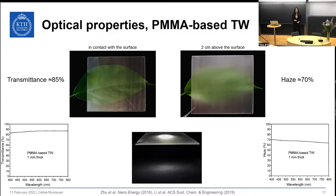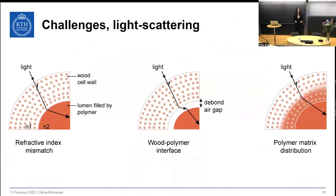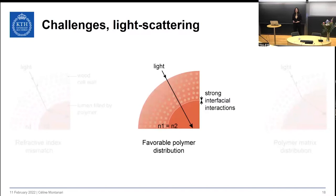This can be done by controlling the nanostructure. Light scattering should be minimized by matching the refractive index of the wood substrate with that of the polymer matrix, since refractive index mismatch results in light scattering. Also, compatibility between wood and polymer matrix should be favorable to avoid debonding air gaps that further scatter light. The polymer should also be well distributed throughout the cell wall to avoid nanoscale defects. Ideally, the material should have favorable polymer distribution with the polymer matching the refractive index of the wood reinforcement.